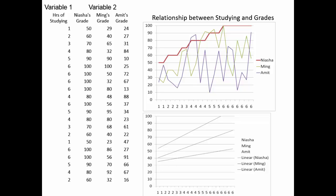Let's look at an example. I have variable X and variable Y. I'm looking at three sets of grades from Nyesha, Ming, and Amit, and the number of hours they spent studying — one through six hours — and their relationship to the grades they got. Looking at the first line, the red line: Nyesha — every time she studied, her grades improved. The more she studied, the better her grades got. For Ming there was a little bit of relationship, but for Amit there really wasn't any relationship at all.